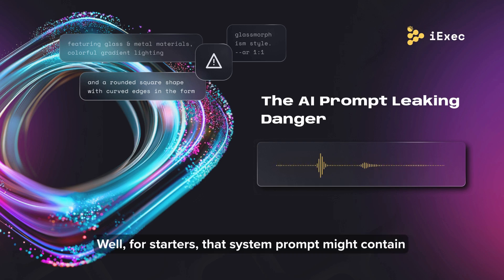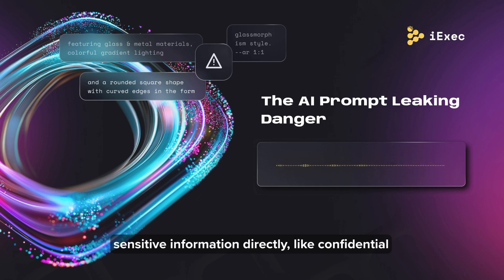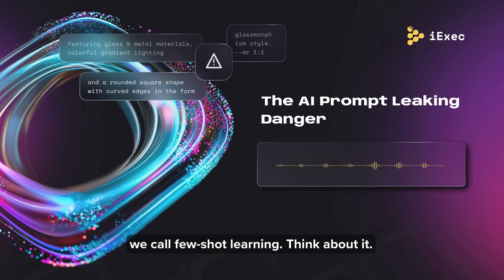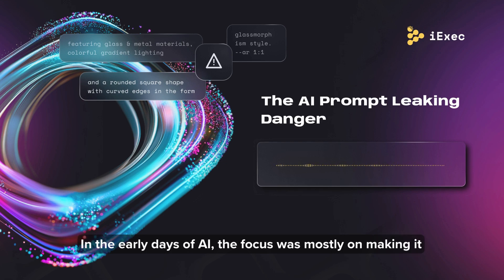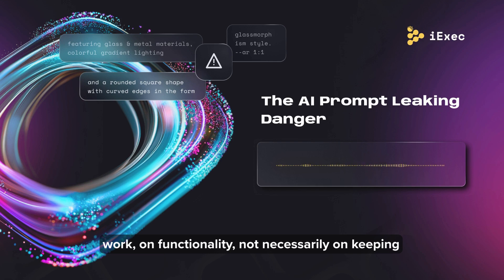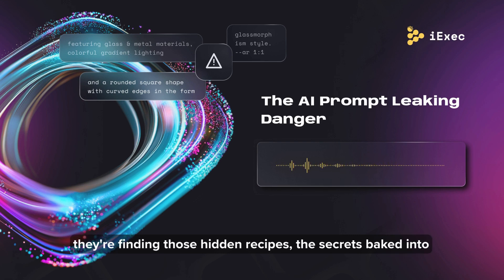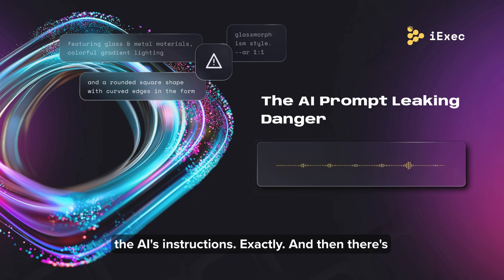That system prompt might contain sensitive information directly, like confidential instructions given to the AI during its development, or even specific examples used to train it, which we call few-shot learning. Attackers can now exploit those overlaps — finding those hidden recipes, the secrets baked into the AI's instructions.